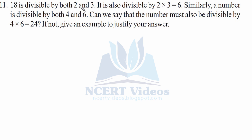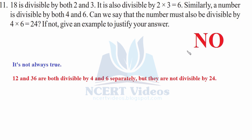Question 11: 18 is divisible by both 2 and 3 and also by their product 6. But if a number is divisible by both 4 and 6, can we say it must be divisible by their product 24? The answer is no, it is not always true. For example, 12 and 36 are divisible by 4 and 6 separately but are not divisible by 24, so this is false.